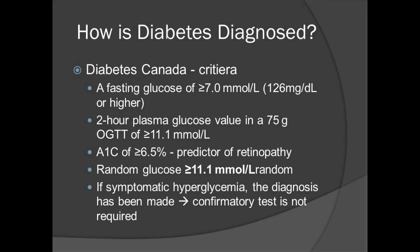Another way one can be diagnosed is with a glycosylated hemoglobin A1C of 6.5% or greater. A random glucose level of 11.1 millimoles per liter or greater is also a criterion. Technically, if a blood test exceeds one of these thresholds, the diagnosis is not confirmed until the blood test has been repeated and shows another value above the threshold. However, if the patient is symptomatic, the diagnosis is made and there is no need to repeat the blood test.